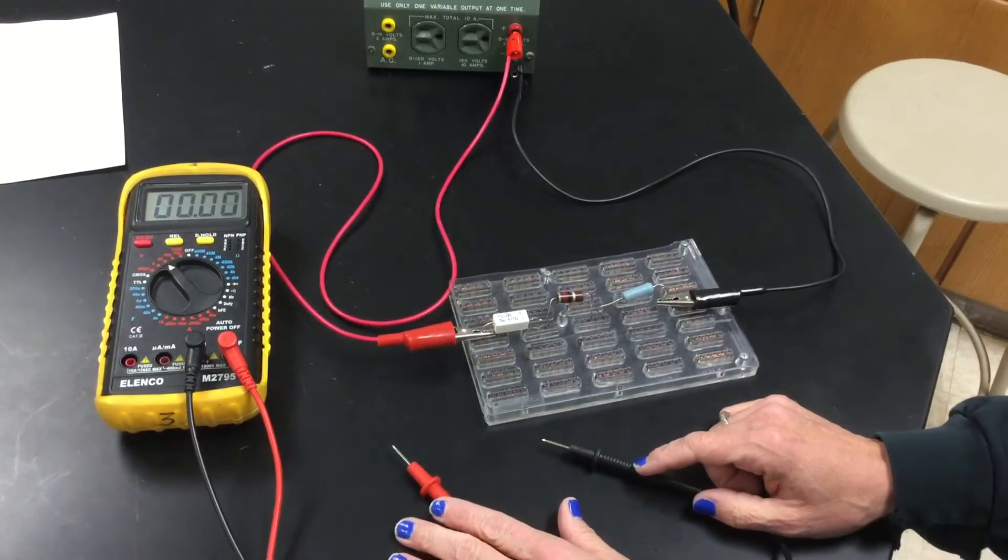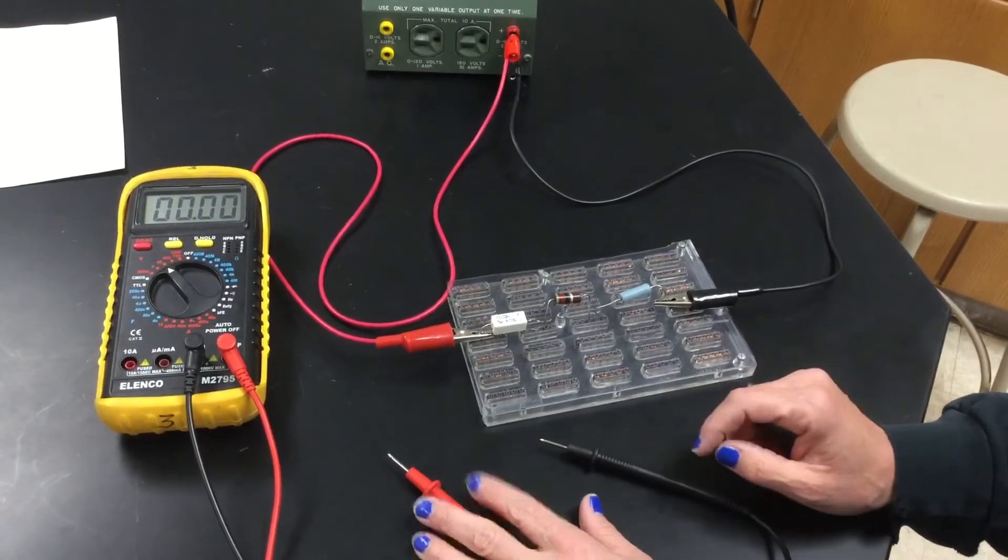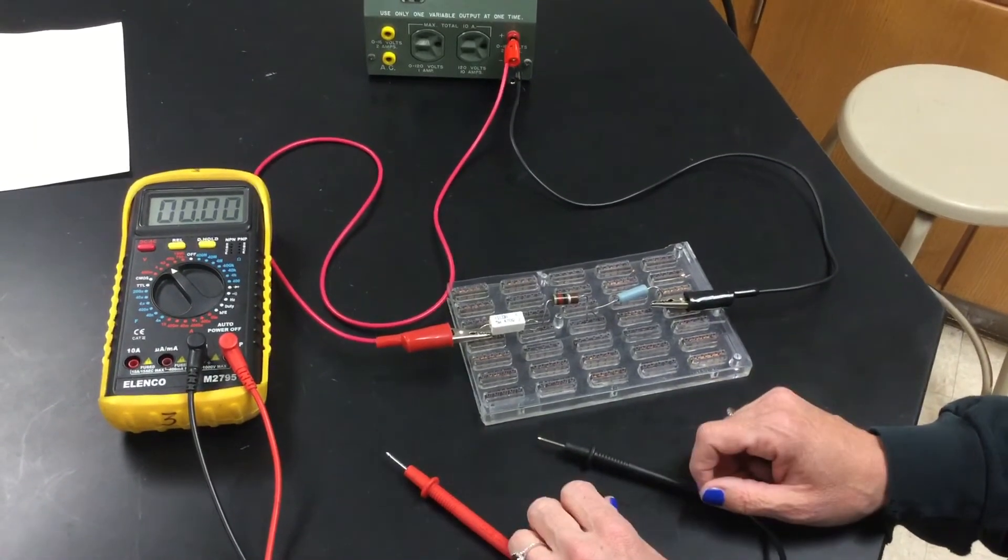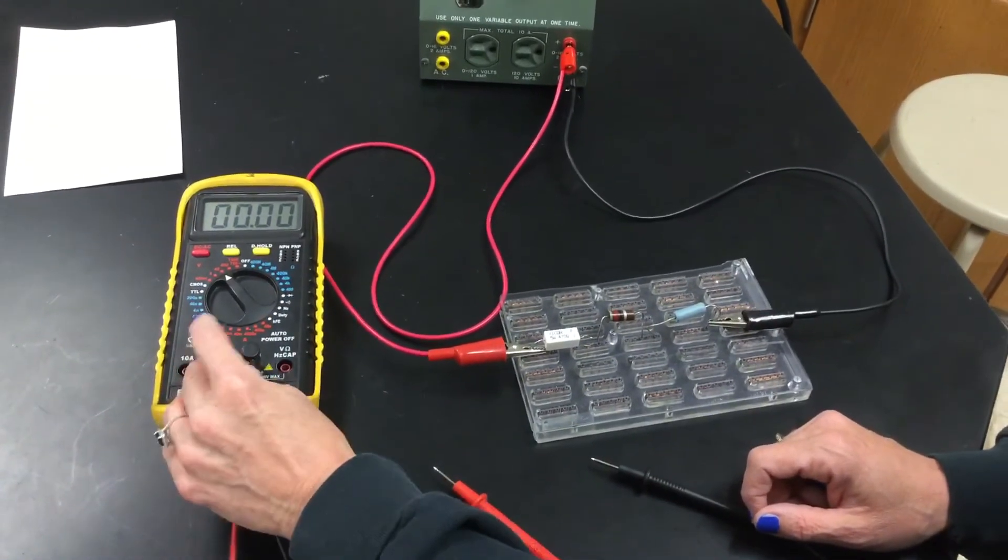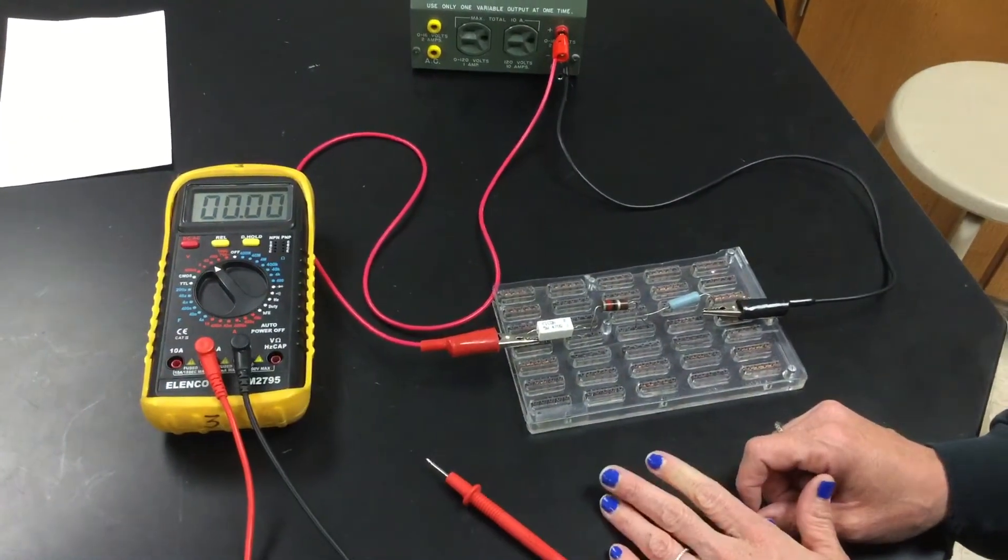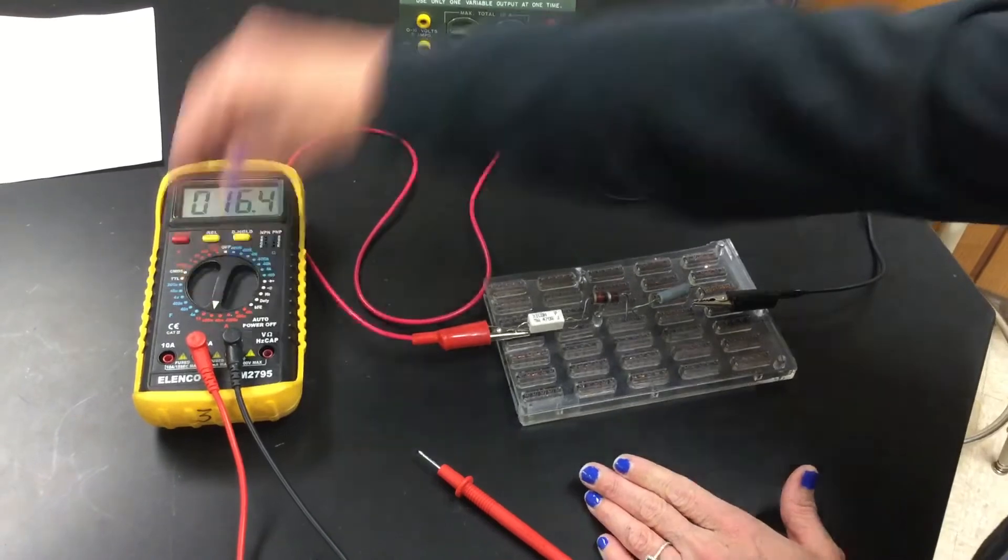Lastly, we're going to measure current. And since current is the same everywhere in a series circuit, we only have to make one measurement of current. You're going to have to move this over to the milliamp port and turn the dial to the 400M.